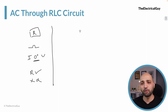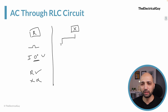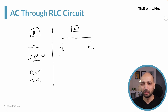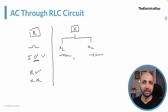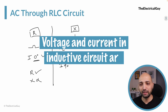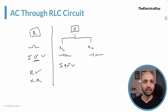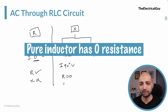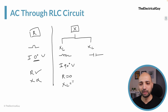The second type of opposition is reactance, which can be of two types: inductive reactance XL and capacitive reactance XC. XL is offered by the inductor and XC is offered by the capacitor. Inductors oppose the change in current by supplying or drawing voltage, so voltage and current in an inductive circuit are 90 degrees out of phase. For a pure inductor, it has zero resistance but 100% inductance.